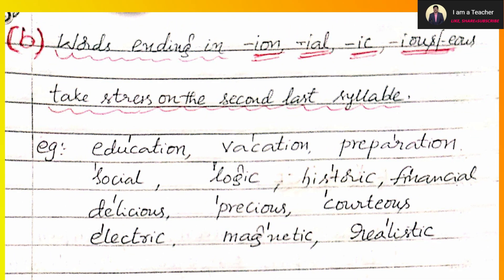The second rule of suffix: words ending in -ion (pronounced 'un'), -ial (pronounced 'ul'), -ious (pronounced 'ikus') — they take stress on the second last syllable. For example, 'education' — divide into syllables: ed / u / ca / tion — the second last syllable is 'ca', so on 'c' we put the stress mark.